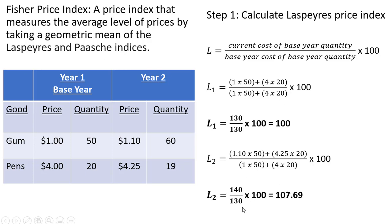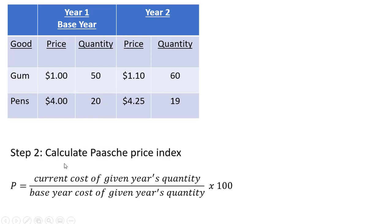Doing the math here, we get an index number in year two of 107.69. So let's calculate the Paasche Price Index.